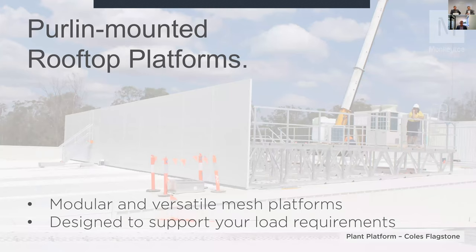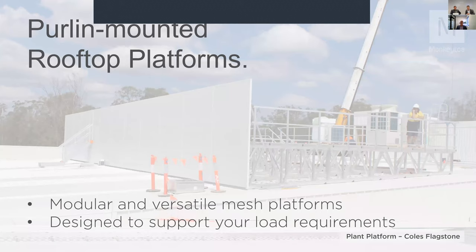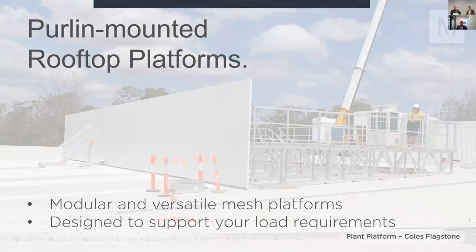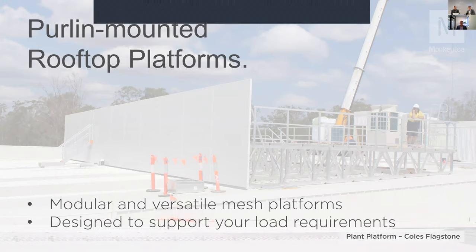Purlin-mounted platforms are also a modular system, which means they're really versatile and flexible. They're designed to suit your load — whether that's a standard rating of 2.5 kPa right up to 5 kPa for some of your larger chiller units. That example shown is at another Coles project — Coles Flagstone — which was a purlin-mounted platform design.